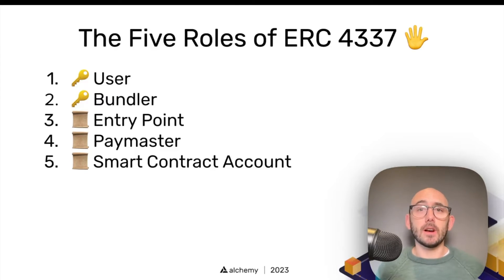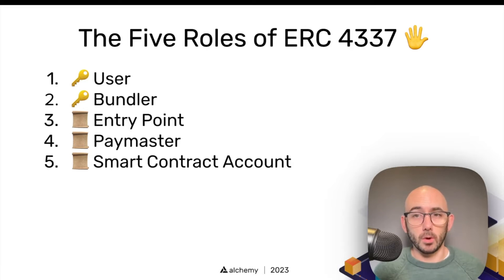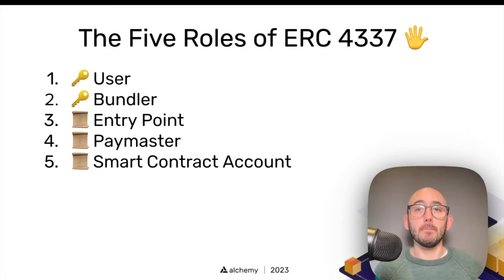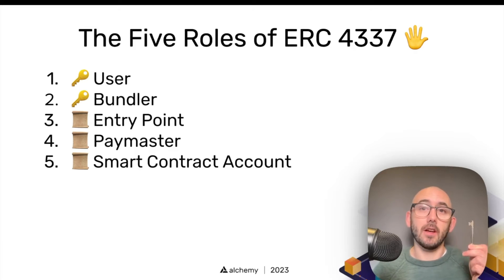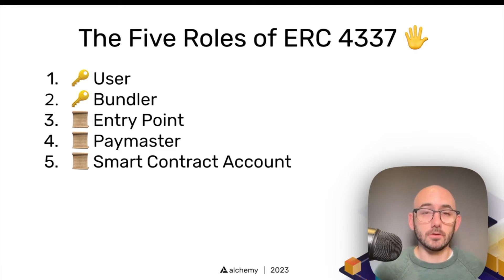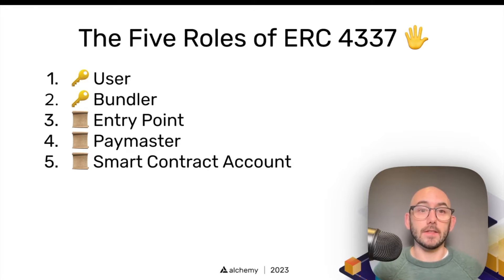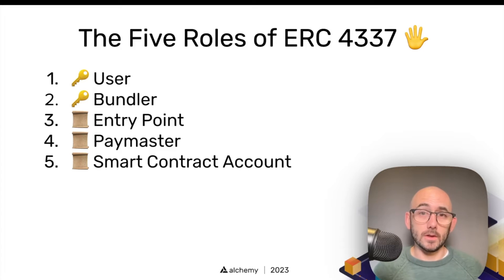Welcome back. We're going to be talking in further depth about the five rules of ERC-4337. We mentioned in the last video what these five rules are, and I want to talk about them in more detail, looking underneath the hood at what is happening here. We have our user and the bundler as the two keys, and then we have three smart contracts: the entry point, the paymaster, and the smart contract account.